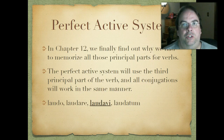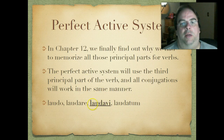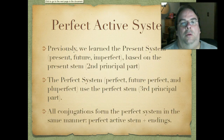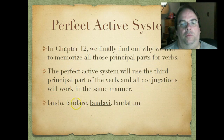We'll pick the first conjugation because it's one of the easier ones to recognize. Laudō, laudāre, laudāvī, laudātum. So we're going to use that laudāvī part this time. Previously we learned the present system, which you remember was the present, future, and imperfect tenses. Those were based on the present stem — that second principal part. So last semester we really concentrated on that.